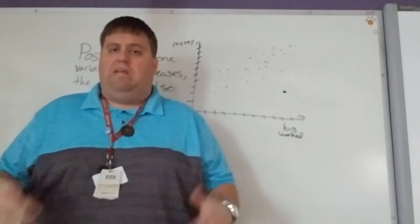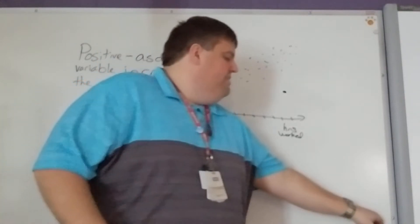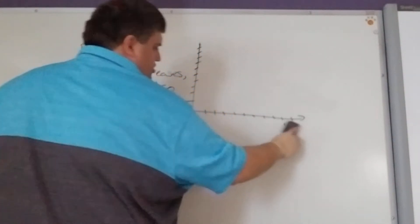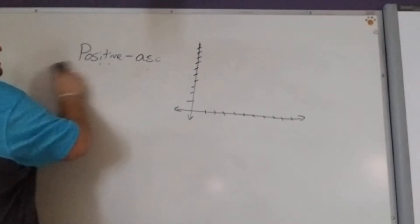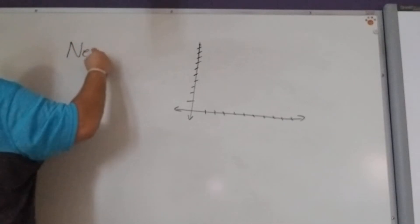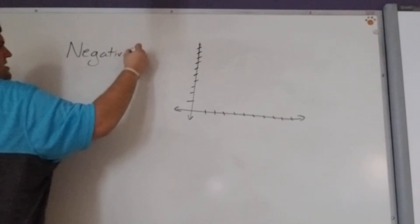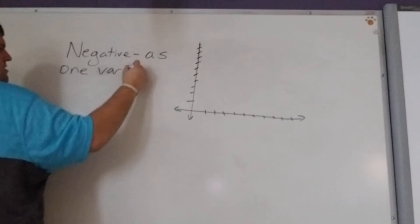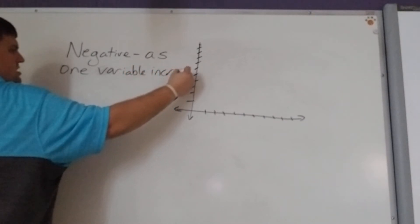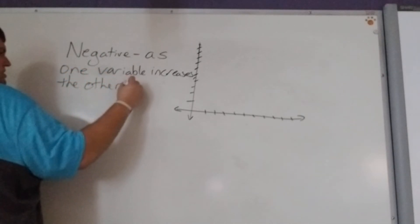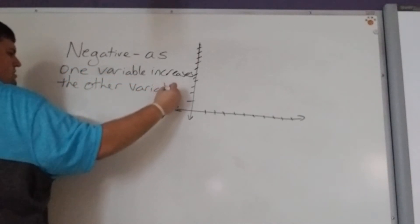Which is why you always want to think of it as one goes up, what happens to the other? Okay? So it's okay if they both go down. It's the same, that just means they both go up. The second option is a negative relationship. In a negative relationship, what's going to happen as one variable increases, the other variable decreases.